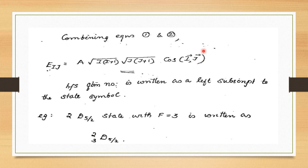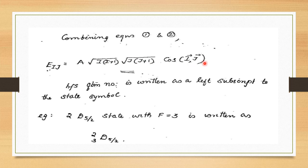Combining these two equations, E_ij = a · √(i(i+1)) · √(j(j+1)) · cos(ij), which gives the interaction energy in terms of the angle between the angular momentum vectors i and j.